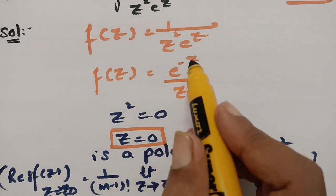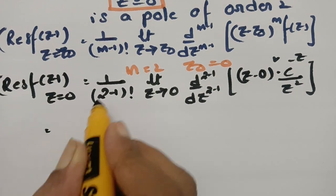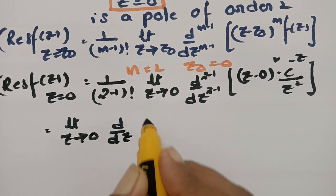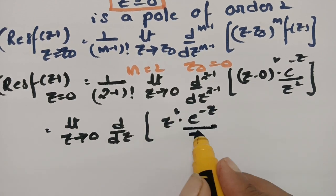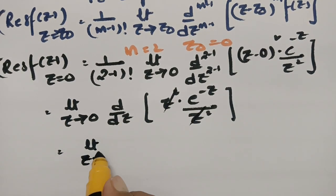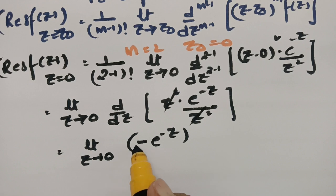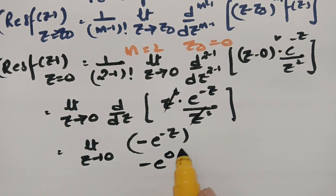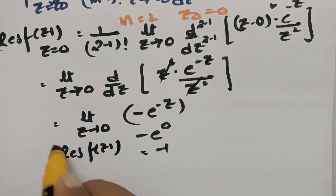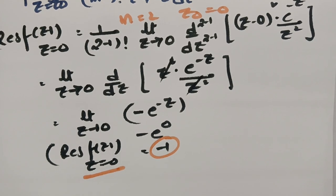Our f(z) = e to the minus z divided by z-squared. So we have the limit as z tends to 0 of d/dz of [z-squared times e to the minus z divided by z-squared]. The z-squared terms cancel, leaving d/dz of e to the minus z. The derivative is minus e to the minus z. Evaluating at z = 0 gives minus 1. Therefore the residue of f(z) at z = 0 is minus 1.